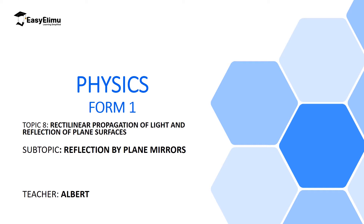Welcome to ECLIMU Learning Simplified. In the previous lesson we discussed rectilinear propagation of light, and now we are moving to the second part of this topic: rectilinear propagation of light and reflection on plane surfaces. Since we have proved that light travels in a straight line, we are going to discuss how light traveling in a straight line can have its direction changed by a plane surface in a process we call reflection. Here we are going to answer the question: how do we see? We will realize we can only see an object when light from that object is reflected into our eyes.